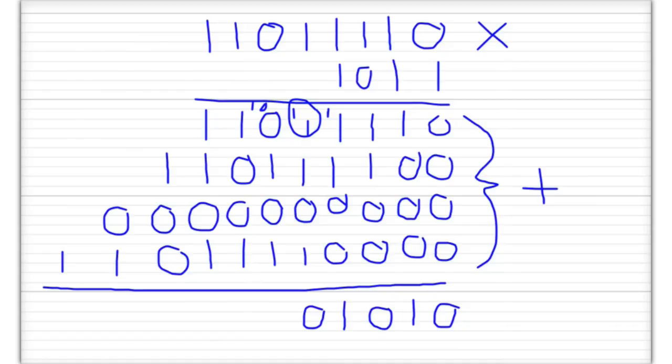Then 1, 0 plus 1 plus 1 — that's 1, 0 plus 1, 0 which is 1, 0, 0 — put 0 down, carry 1, 0. Again 1, 0 plus 1 plus 1 is 1, 0, 0 — 0 down, carry 1, 0. Now 1, 0 plus 1 plus 1 plus 1: that's 1, 1 which equals 3, and 1, 0 is 2, so 2 plus 3 is 5. In binary, 5 is 1, 0, 1 — so put 1 down and carry 1, 0.